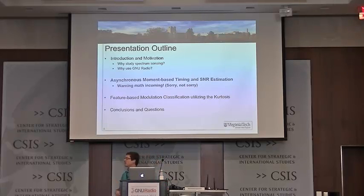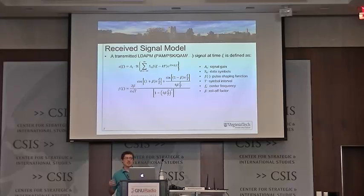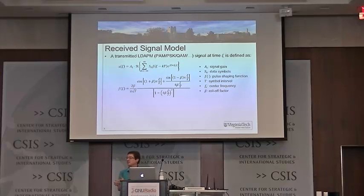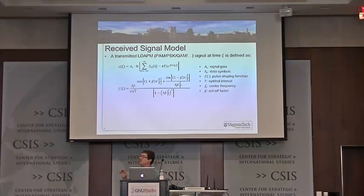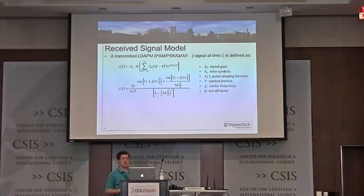Let's talk about the received signal model. I'm considering linear digital amplitude phase modulation schemes — LDAPM for short — which includes PAM, PSK, QAM, or anything where symbols can be placed on an IQ constellation plot. Anything in blue is unknown, anything in black is known. We have symbols with a root-raised cosine pulse shape, which has a roll-off factor and symbol interval. The received signal, assuming an AWGN channel, includes a channel gain, a constant phase shift, and a constant propagation delay.